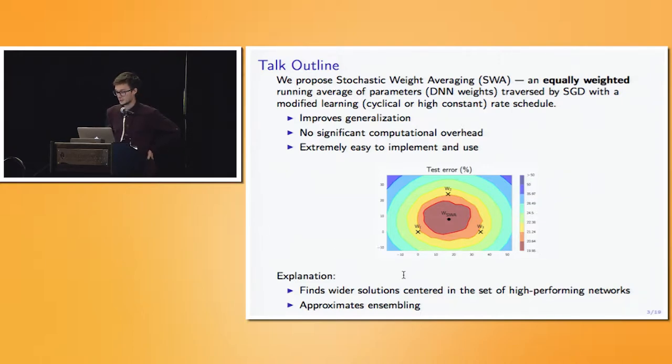In this work, we propose stochastic weight averaging, which is a new technique for training deep neural networks. The main idea for SWA is to maintain a running average of the weights traversed by SGD with a modified learning rate schedule. The way we modify the learning rate schedule is to make sure that SGD doesn't just simply converge to a single solution, but continues to explore as a set of high-performing networks. SWA consistently improves generalization on a wide range of benchmarks. It also has almost no computational overhead compared to conventional training, and it's extremely easy to implement and use.